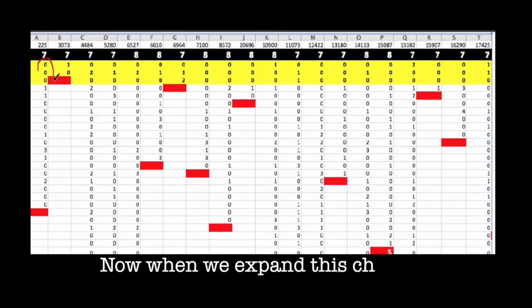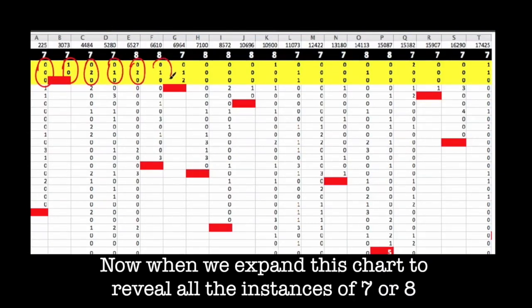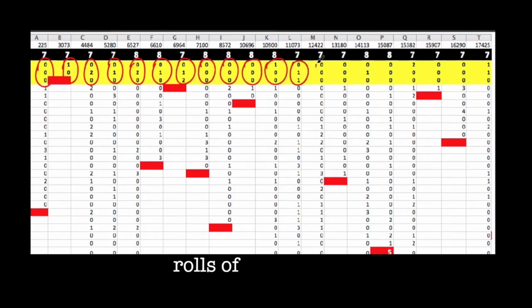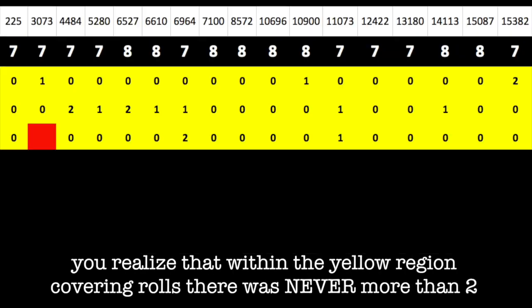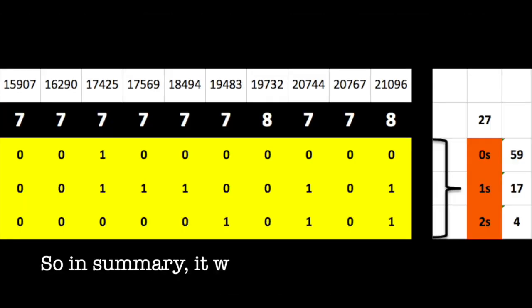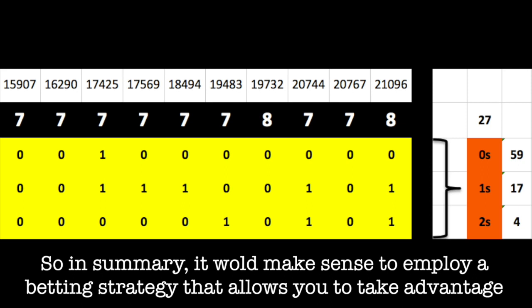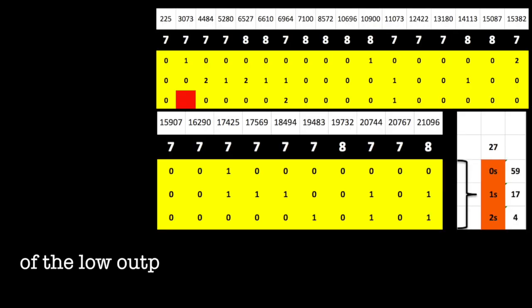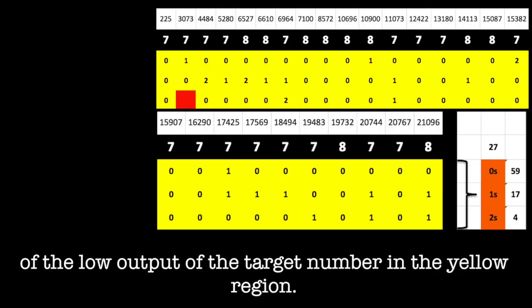Now, when we expand this chart to reveal all the instances of seven or eight rolls of the four or ten, you realize that within the yellow region covering rolls, there were never more than two of the target number rolled. So, in summary, it would make sense to employ a betting strategy that allows you to take advantage of the low output of the target number in this region.